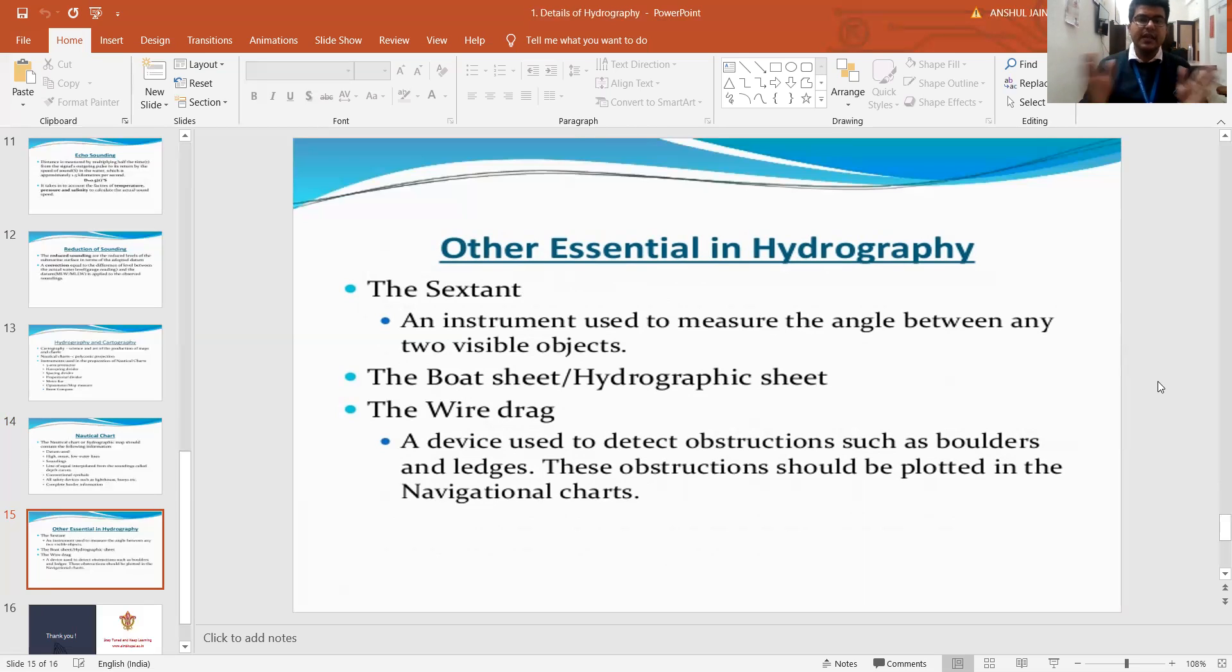It is used to measure the angle between two visible objects. For example from a particular boat we are visualizing two different objects, then the angle made between these two objects from our particular center point or from our boat to these two different objects is measured with the help of an instrument which is called sextant. The boat sheet or the hydrographical sheet is required for doing this hydrographical work.